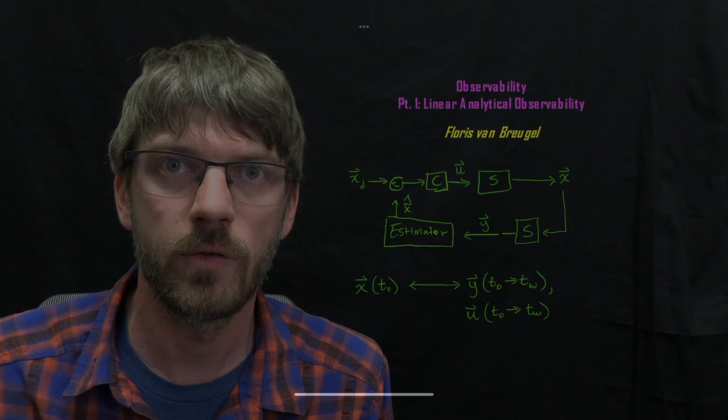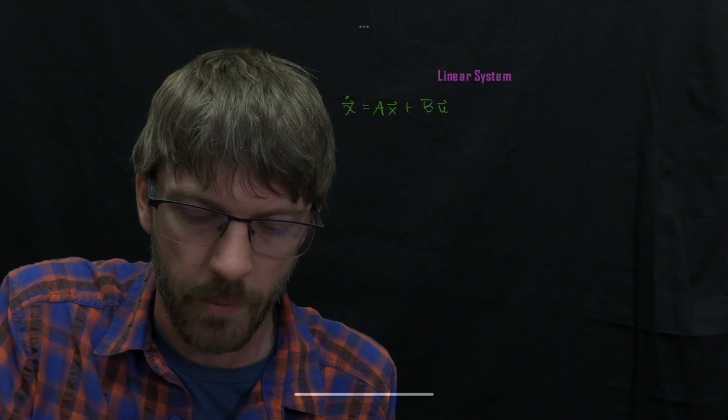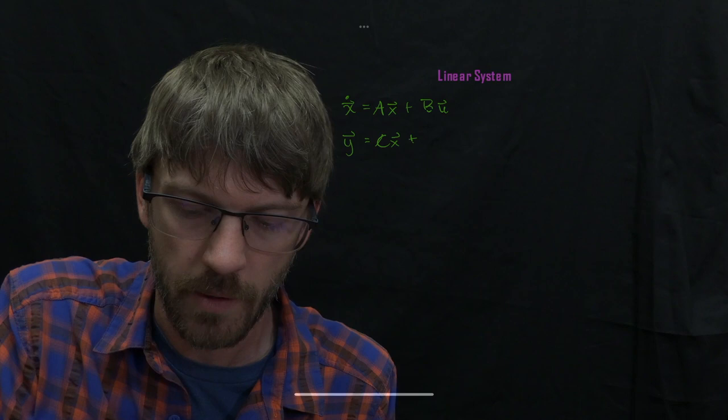Okay, so let's get into it. We're going to start out with linear systems before we move on to the non-linear case. So consider a very simple linear time-invariant system, the standard x dot equals Ax plus Bu, and we have our measurements y are given by Cx plus Du.